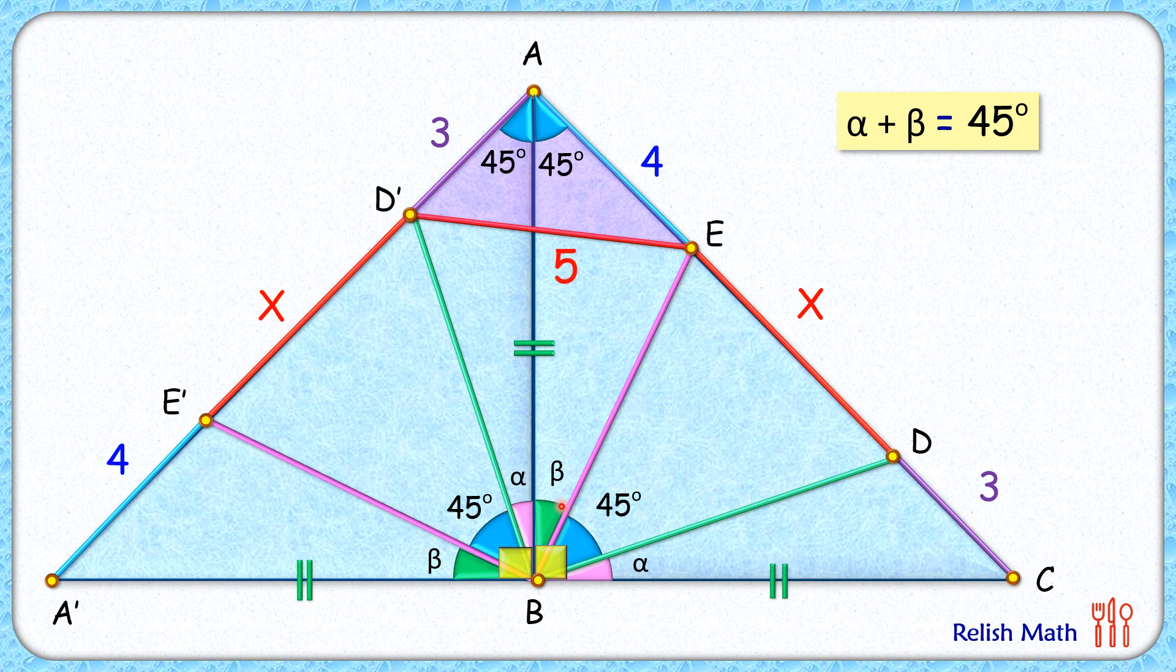Now here this angle it's alpha plus beta which is nothing but 45 degrees, so we can say that this angle here is 45 degrees. Now let's assume this pink length is A centimeter and the green length that's B centimeter.